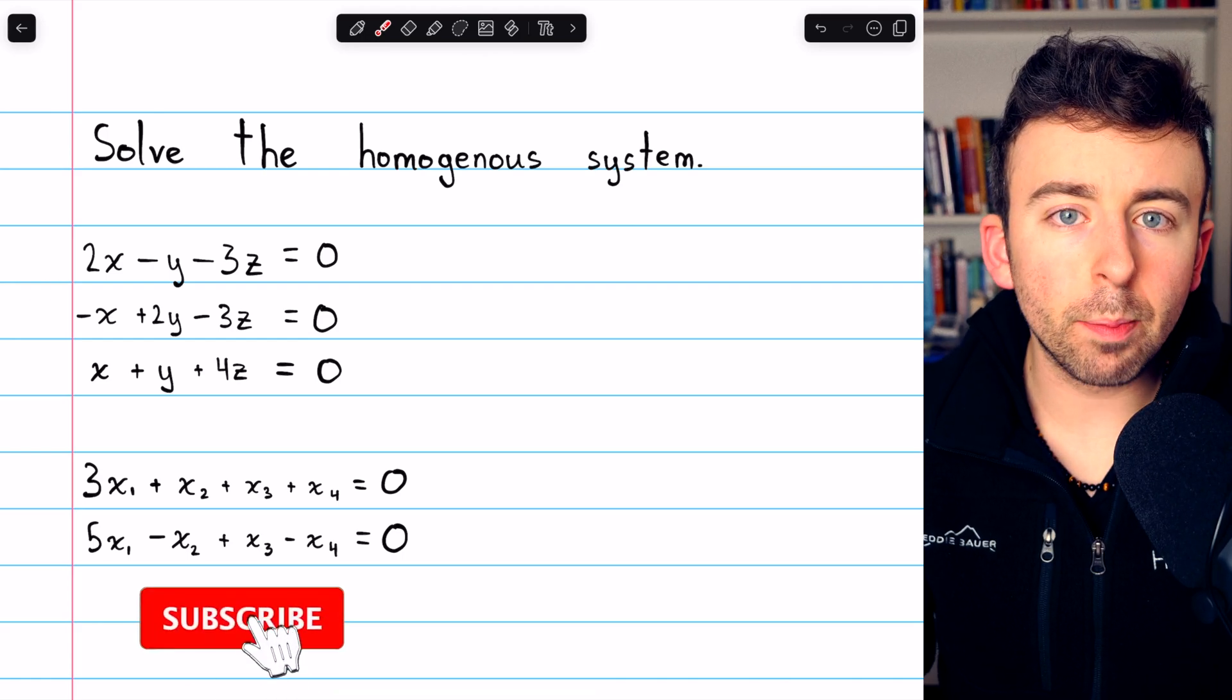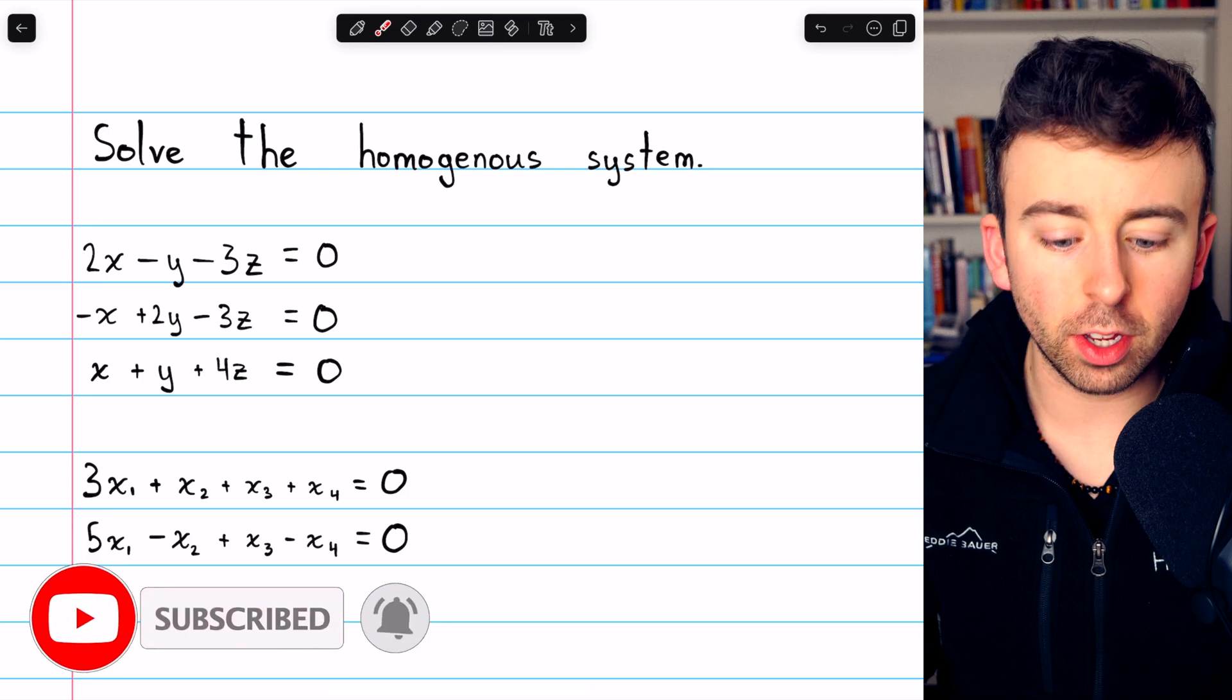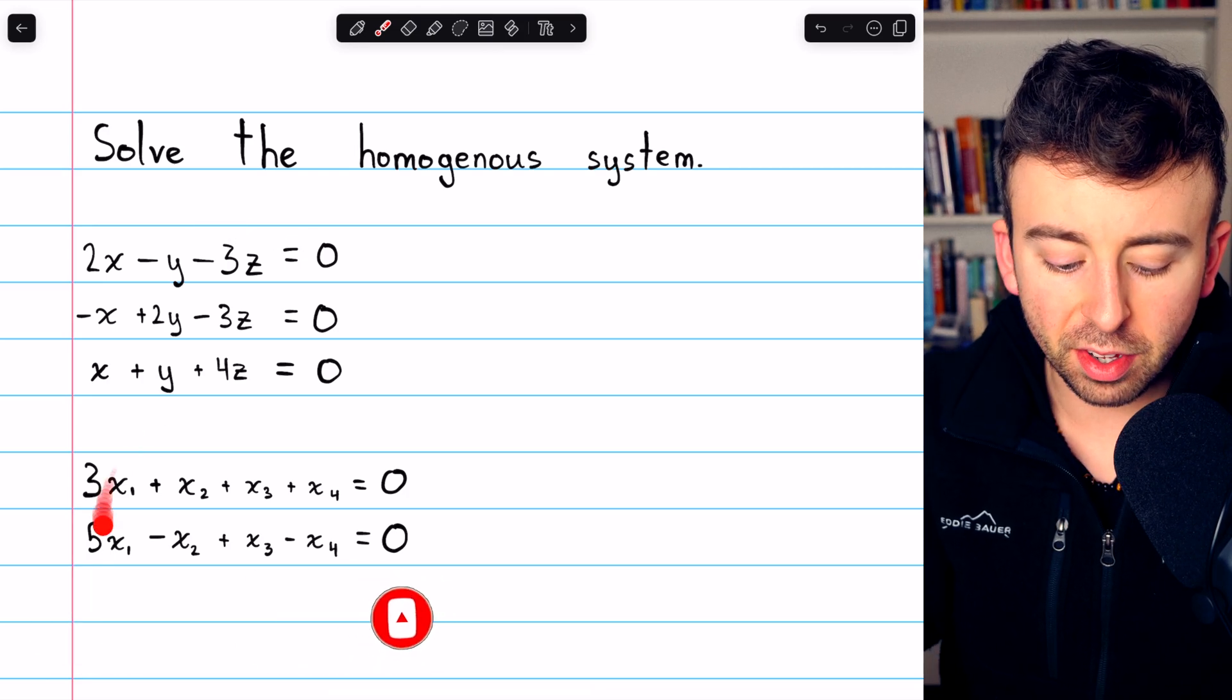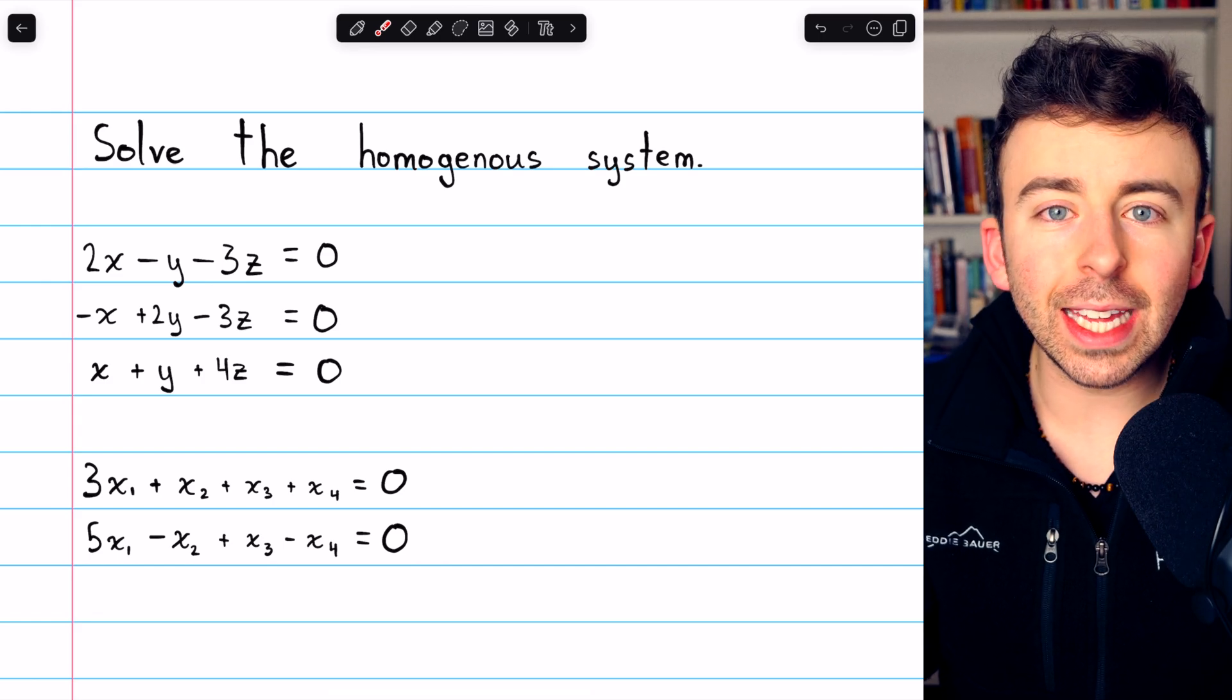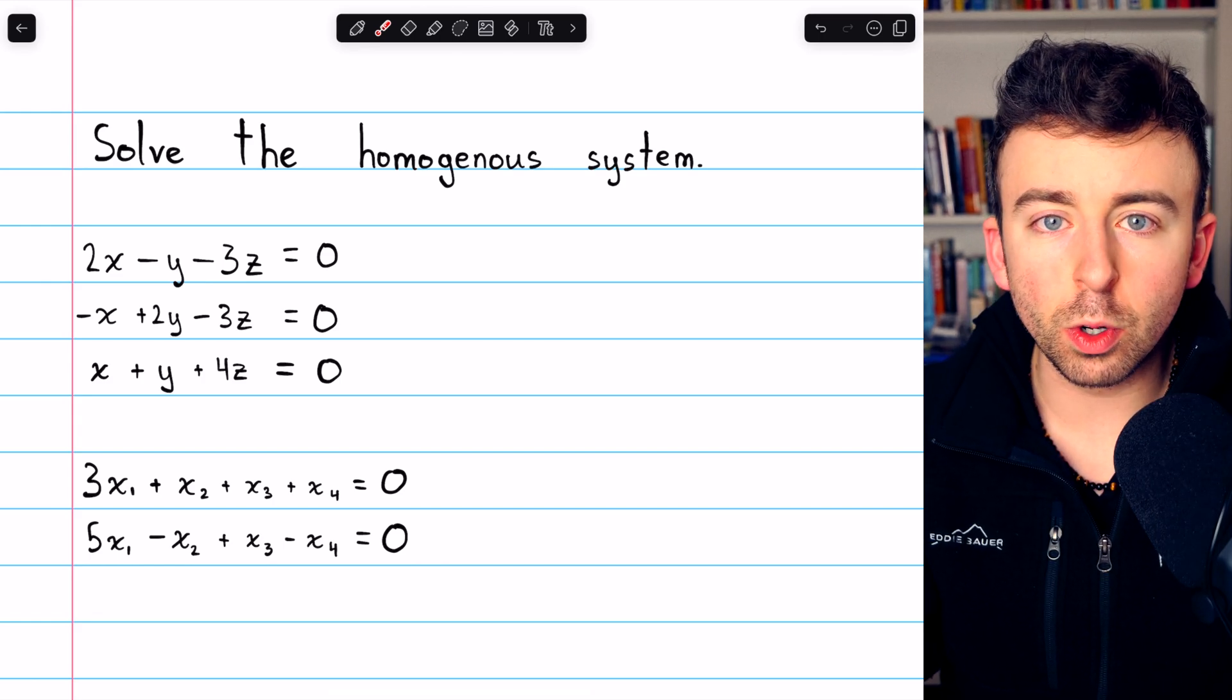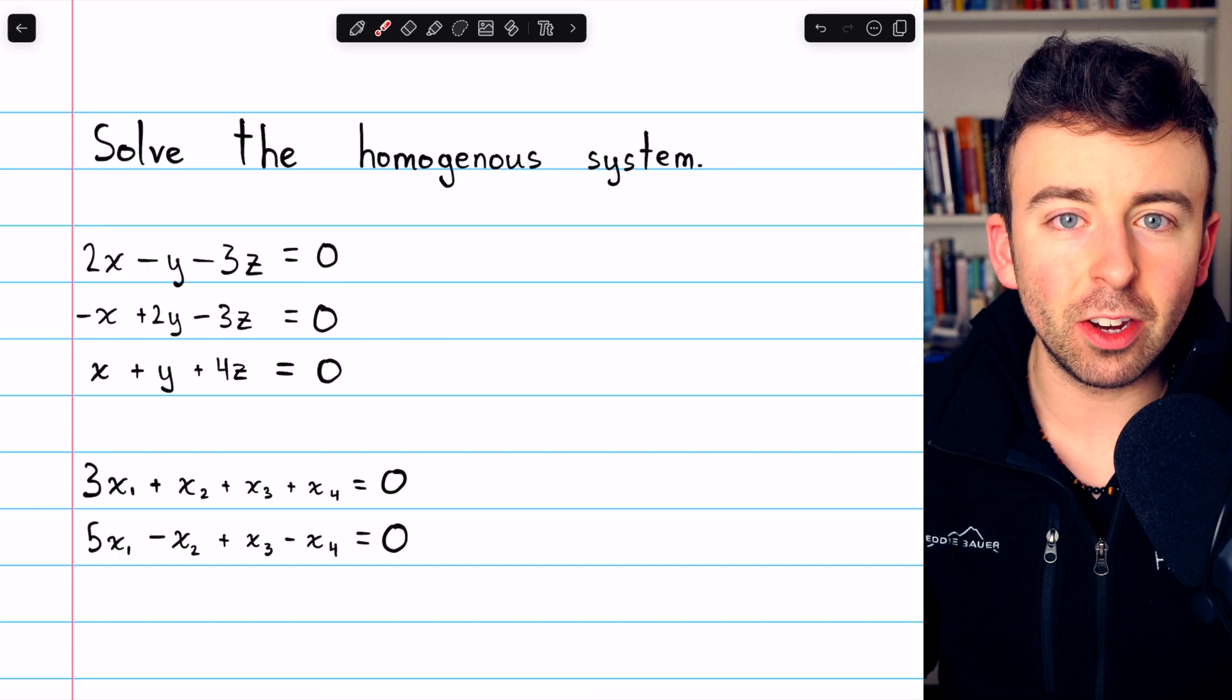We're going to go through two examples of solving homogeneous systems of linear equations. We're going to solve these two systems, and we'll do it using Gaussian elimination.